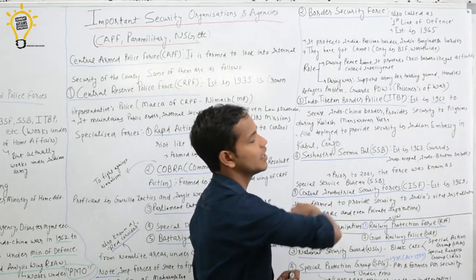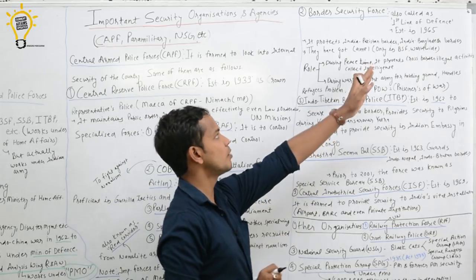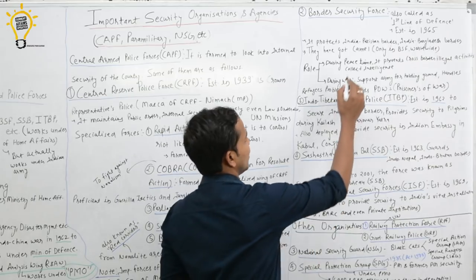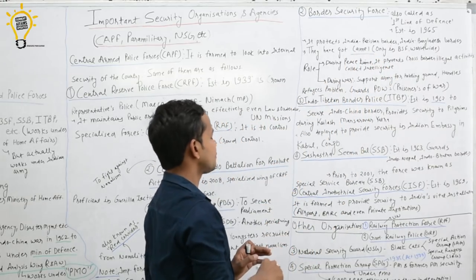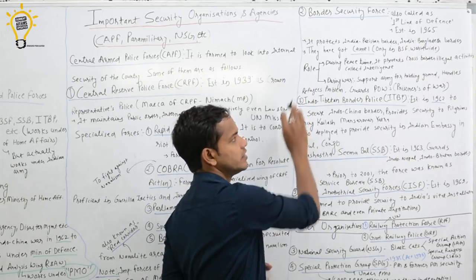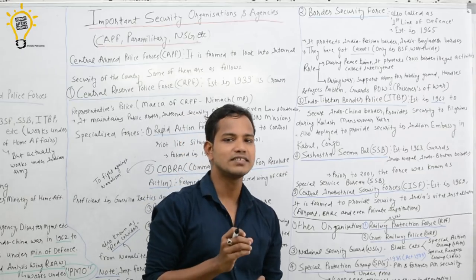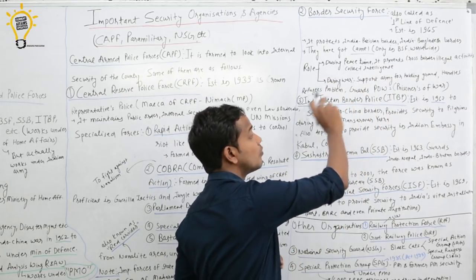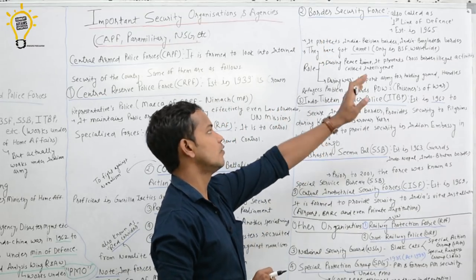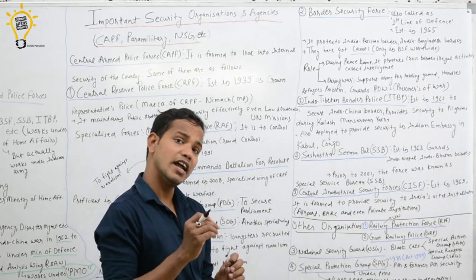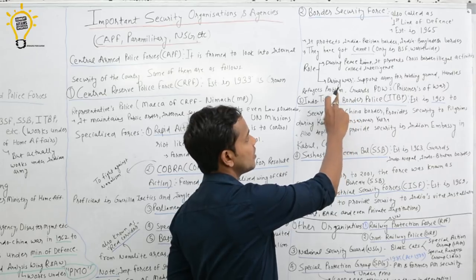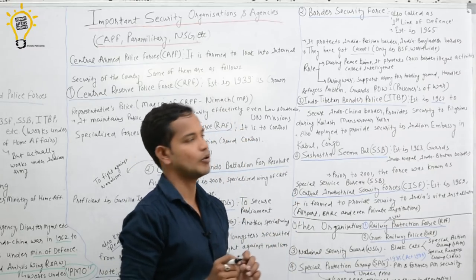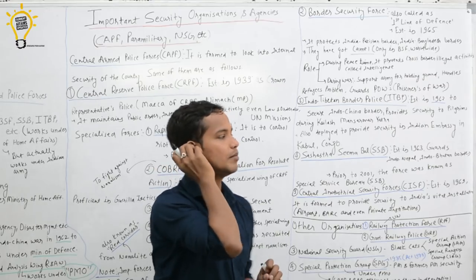Next comes Border Security Force. This is called the country's first line of defense. Formed in 1965, its main work is to protect the India-Pakistan border. It is the only organization in the country which has got camels. Its roles are: in peacetime it sensitizes people, creates peace among people living near the border area. Apart from this, it controls cross-border illegal activities. But when war happens, in war situations BSF's mandate is that it supports the army for holding grounds. Apart from this, it actually works under the Indian Army there. It directly supports refugee problems, looks after refugee problems. Apart from this, it guards prisoners of war during wartime. This is what BSF does. BSF is also deployed for United Nations missions.